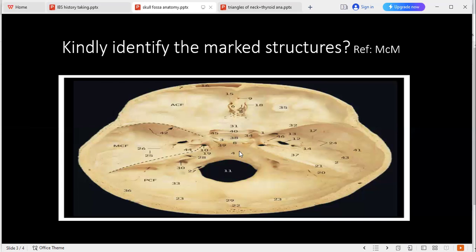Can you please identify number 12 over here? It's the foramen ovale. Please tell me the contents of foramen ovale. It's the mandibular division of the trigeminal nerve, accessory meningeal artery, and lesser superficial petrosal nerve.